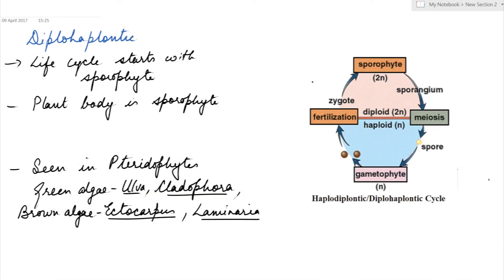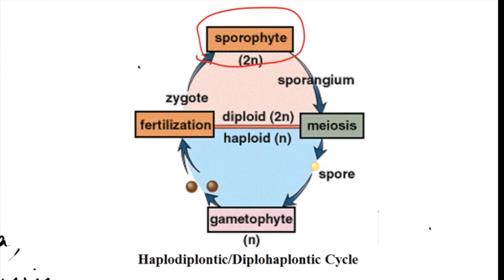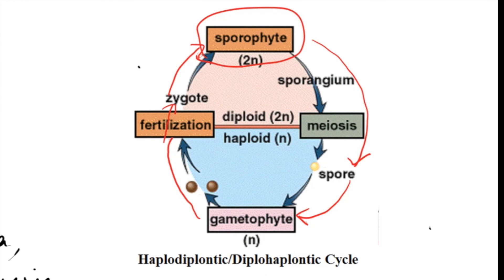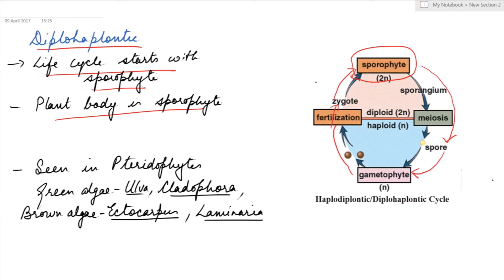In the case of the diplohaplontic life cycle, the life cycle starts with the sporophyte, so the plant body term refers to the sporophyte. The sporophyte produces spores after meiosis; the spores form the gametophyte, which produces gametes that undergo fertilization to form the zygote, which then divides to form the sporophyte again. This life cycle can be seen in pteridophytes, in green algae like Ulva and Cladophora, and in brown algae like Ectocarpus and Laminaria.